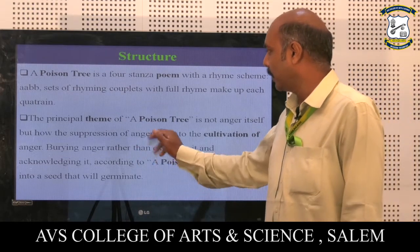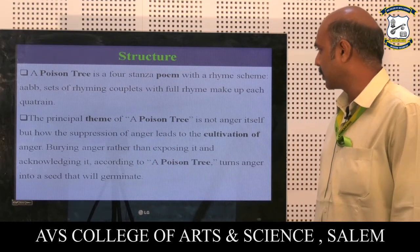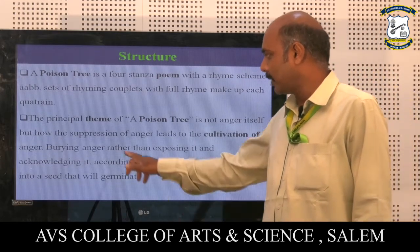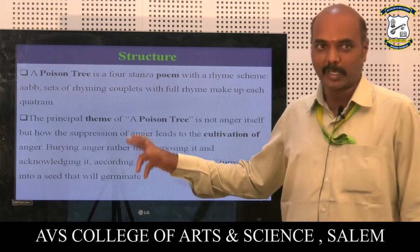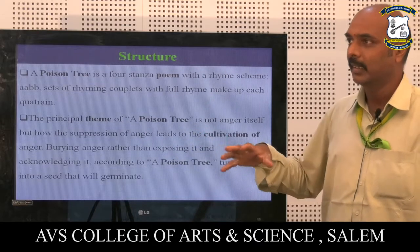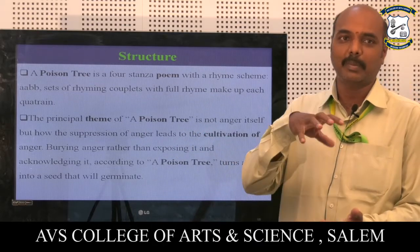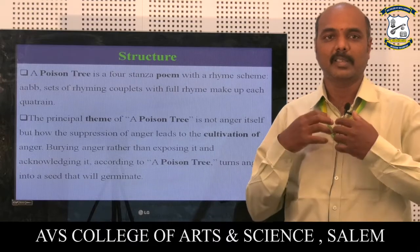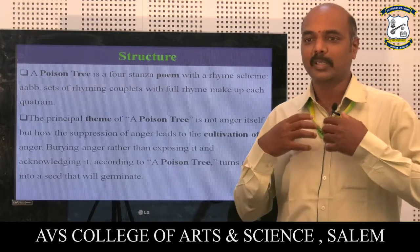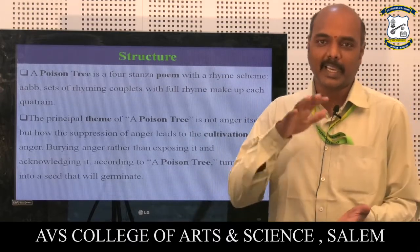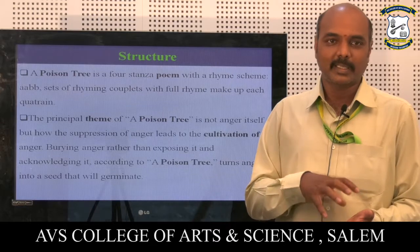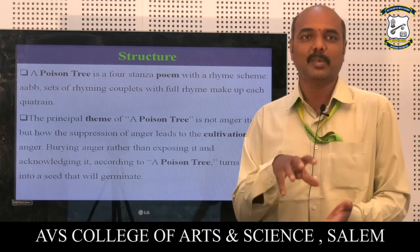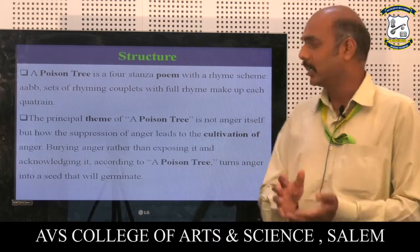The principal theme of the poem A Poison Tree is not anger itself, but the suppression of anger. It is not talking about anger directly, but about what happens when you suppress your anger. Sometimes we do not reveal our anger — we hide it — but the anger remains inside us.